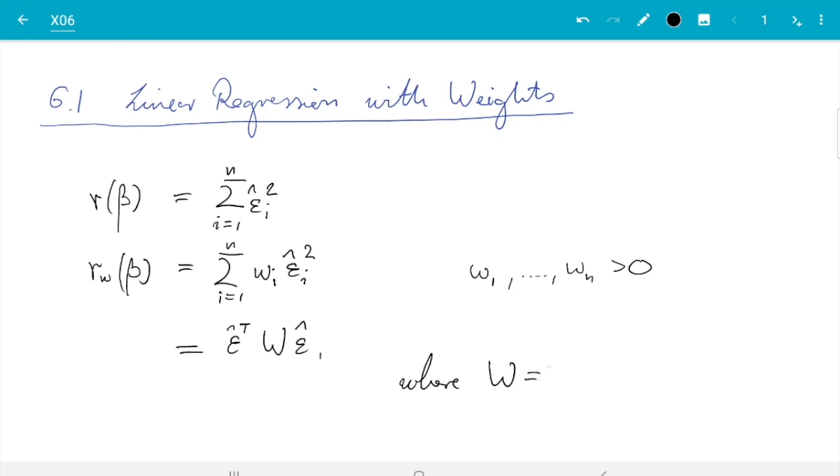W is the diagonal matrix which has just w1 up to wn, the weights on the diagonal. So if you check what happens if we do W times ε̂, then we get a vector which has w1 times ε̂1 as the first entry.